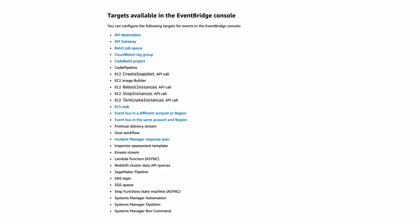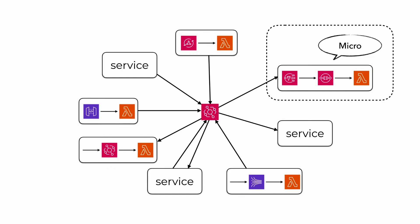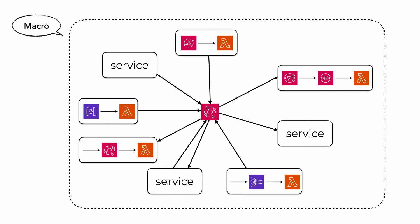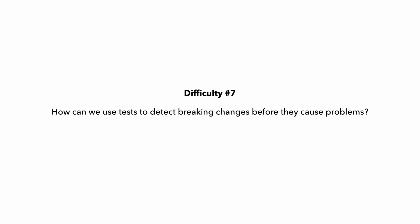Since EventBridge supports a large number of targets — including sending messages to SNS topics and SQS queues directly without needing custom code in Lambda functions or containers — we also have to think about how we're going to test these direct service integrations. And those are just the challenges at the micro level, inside the boundary of a single service. At the macro level, a common challenge is how do we make sure that event publishers don't make breaking changes to the event schema that would cause problems for their consumers? And how can we use tests to catch these breaking changes early, before they get rolled out to production and cause an outage?